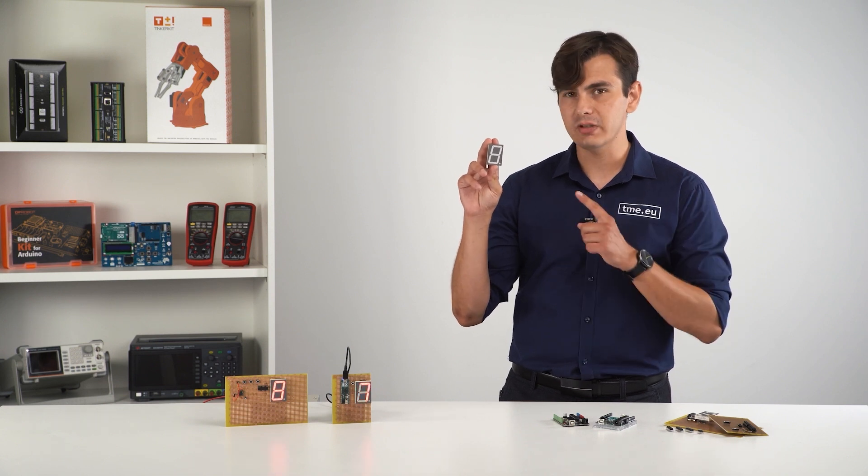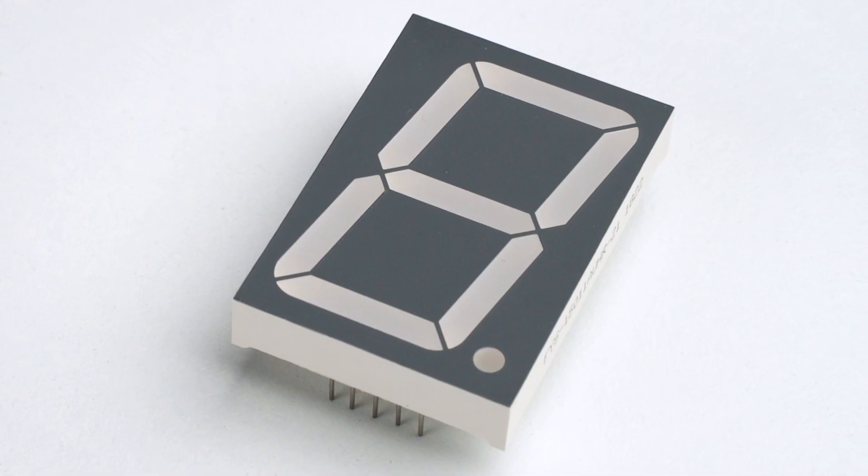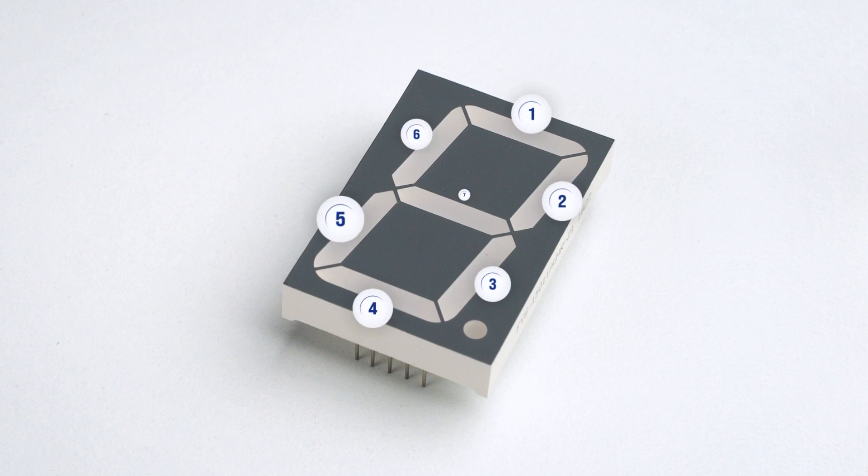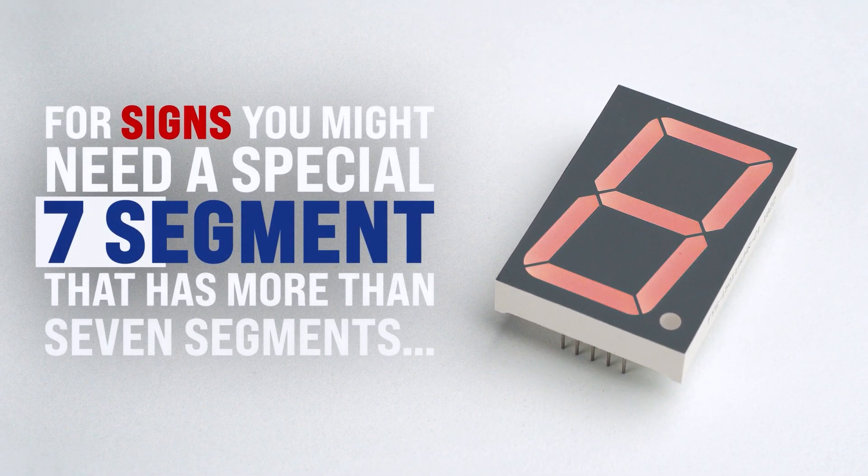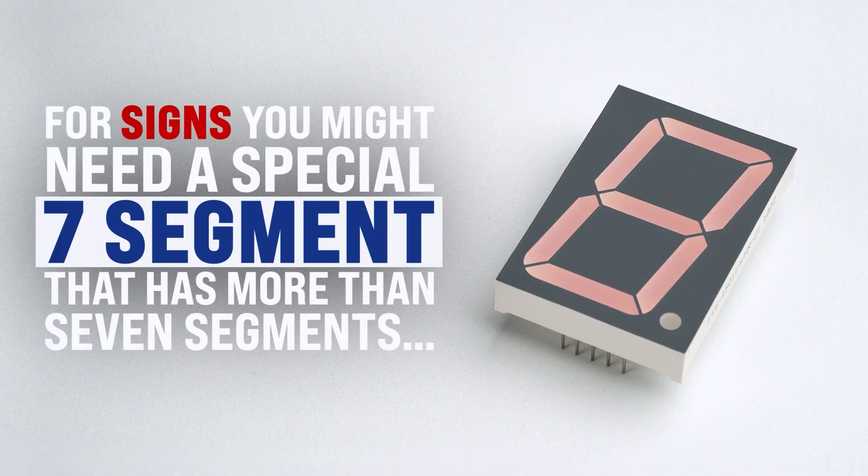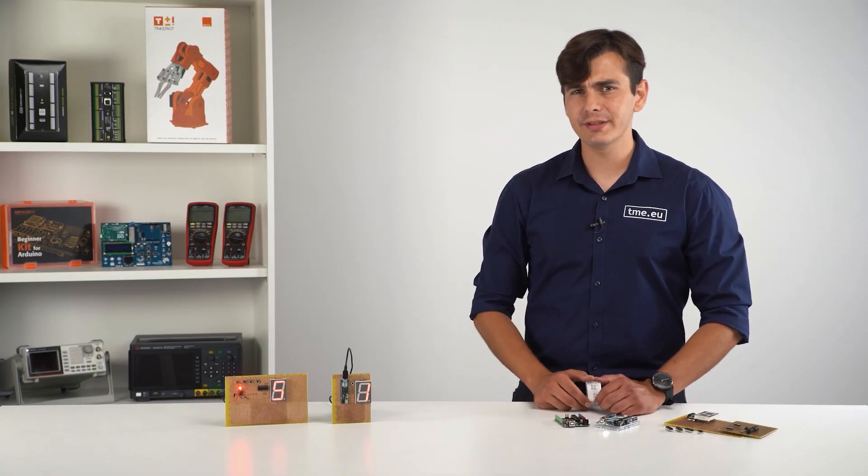So as the name suggests, seven segment display is a small, not this one, it's pretty large. It's a small modified matrix that consists of seven LEDs. Seven, they can be controlled individually to form a number, a letter or even a sign like dot or a dash or a slash.